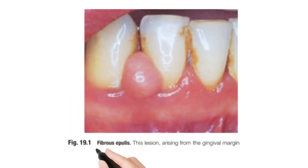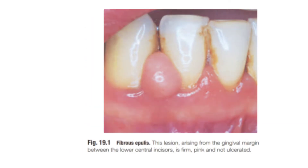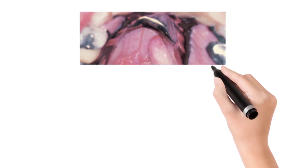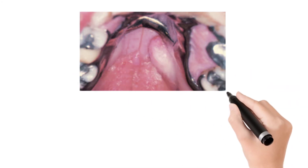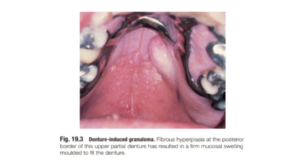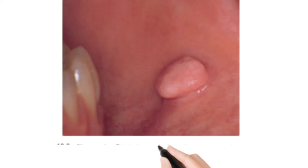Now looking at the diagram: fibroepulis is found at the gingiva of the anterior lower teeth mainly. The second is denture-induced granuloma, which is formed at the over-extended margins of the denture, as seen here in the removable partial denture. The third is fibrous polyp, which occurs on the buccal mucosa due to cheek biting, located buccal to the posterior teeth.